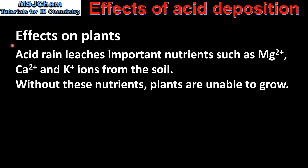Next we will look at the effects on plants. Acid rain leaches important nutrients such as the magnesium ion, the calcium ion and the potassium ion from the soil. Without these nutrients, plants are unable to grow.